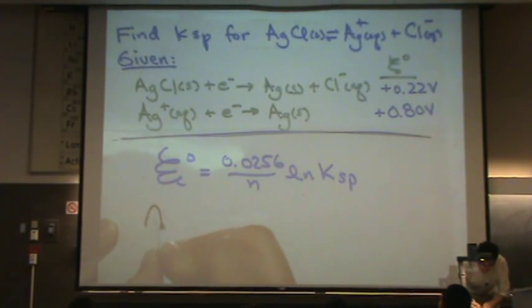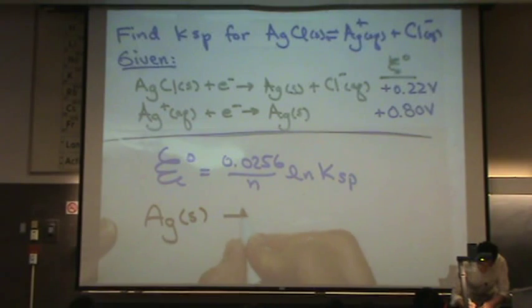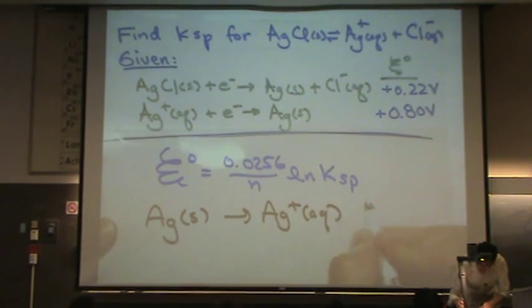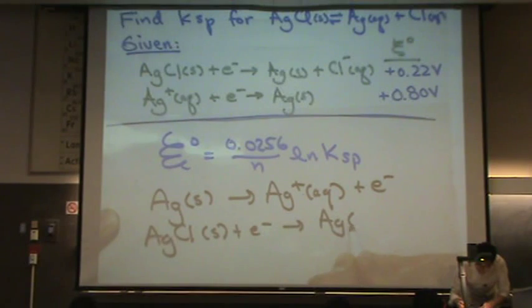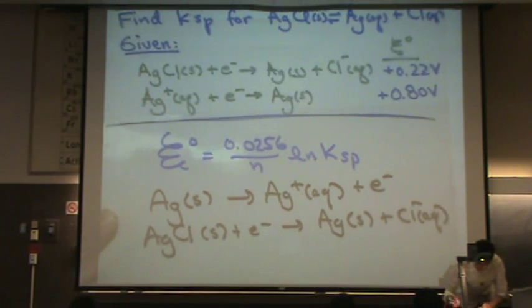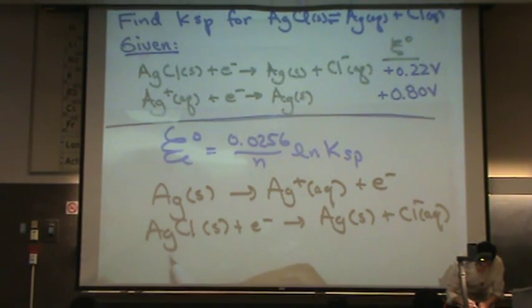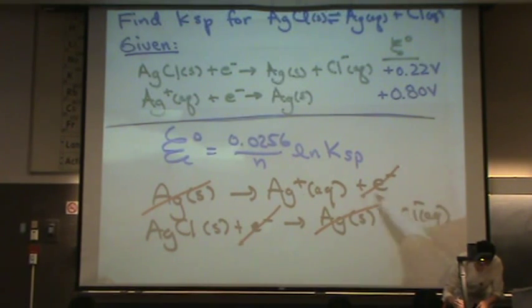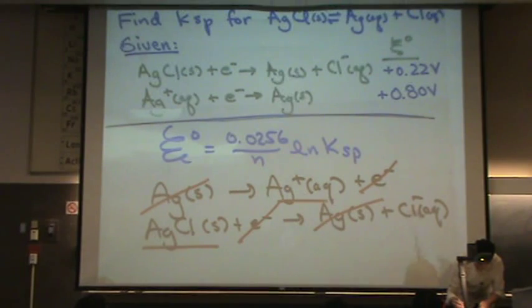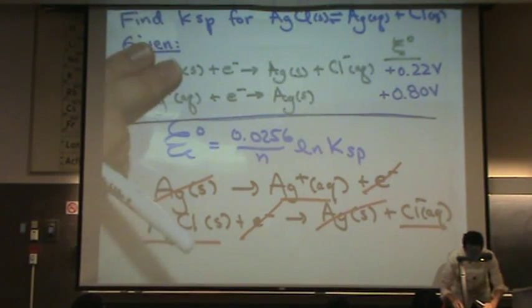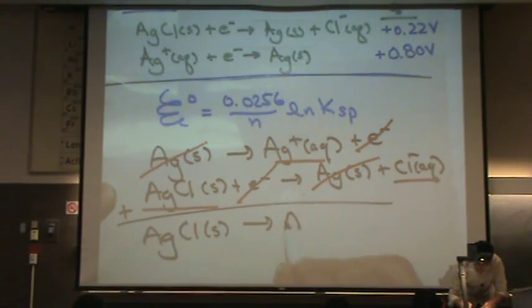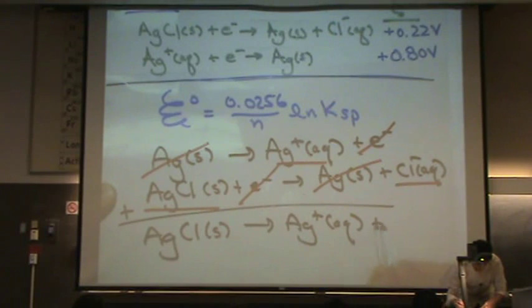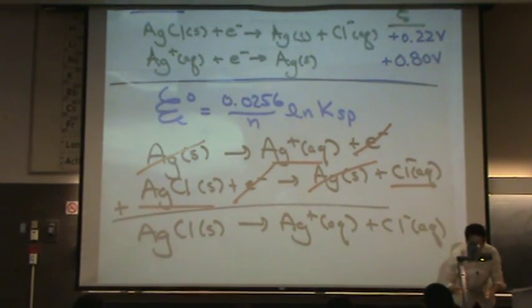Let me write that out. Ag solid goes to Ag+ aqueous plus an electron. Let me rewrite the first reaction. AgCl solid plus an electron goes to Ag solid plus Cl- aqueous. And you'll notice when this happens, the Ag solids cancel and the electrons cancel. So, I'm left with the reaction I wanted. And let me write that reaction down. That is AgCl solid goes to Ag+ aqueous plus Cl- aqueous. This is a solubility product reaction or KSP type reaction.